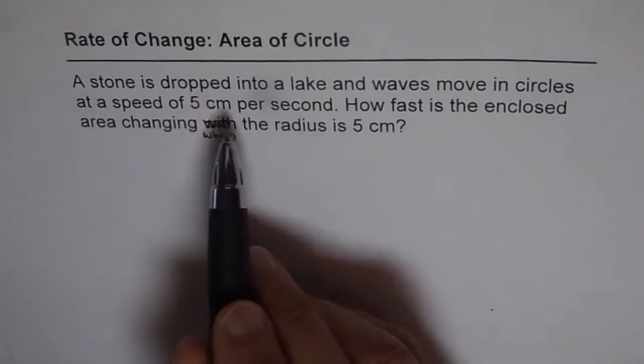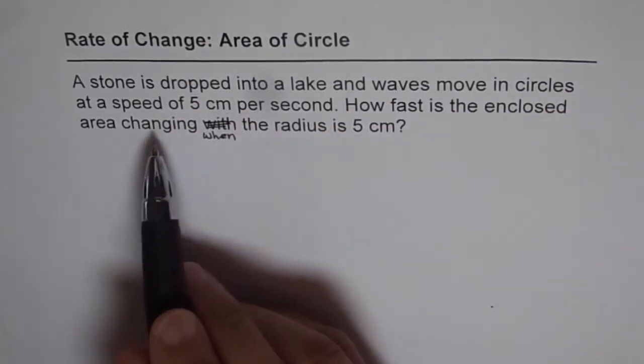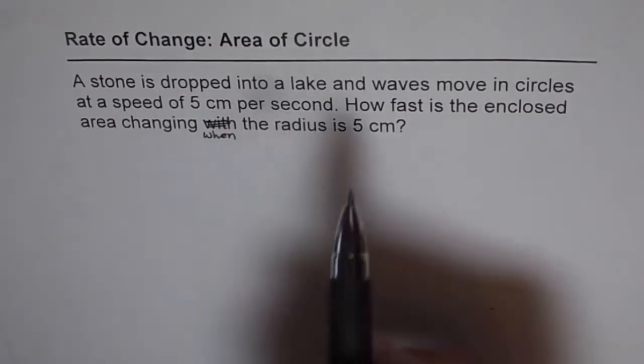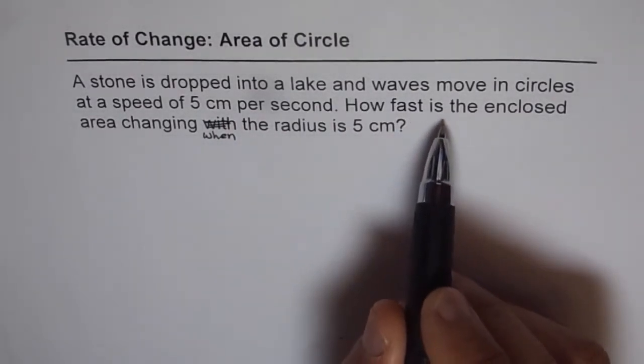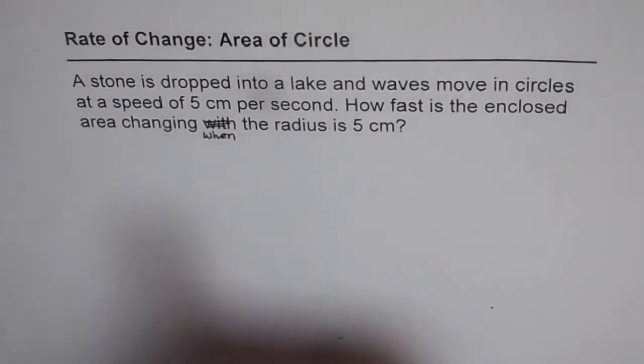A stone is dropped into a lake and waves move in circles at a speed of 5 cm per second. How fast is the enclosed area changing when the radius is 5 cm?